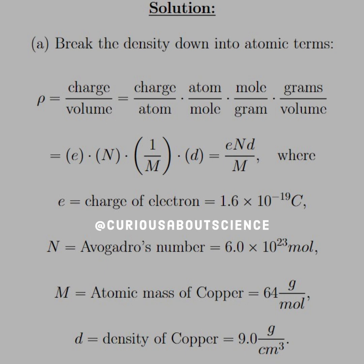Then we could plug in what these variables are, E and 1 over M and D, where we can combine these to E N D over M, where E is the charge of an electron at 1.6 times 10 to the negative 19 Coulomb. N is Avogadro's number, 6.0 times 10 to the 23 per mole.